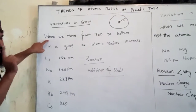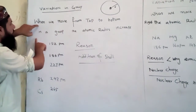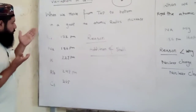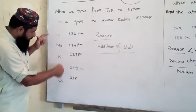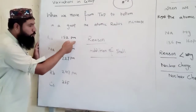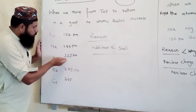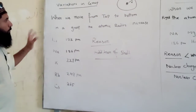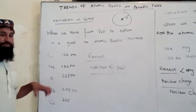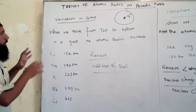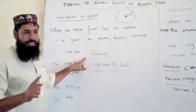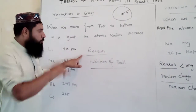Variation in group: when we move from top to bottom in a group, the atomic radius increases. Look at this — this is the first group, the alkali metals. We have lithium, sodium, potassium, rubidium, and cesium. The atomic radius is 152 picometers for lithium, 186 for sodium, 227 for potassium, 248 for rubidium, and 265 for cesium. You can see that moving from top to bottom, the atomic radius increases.